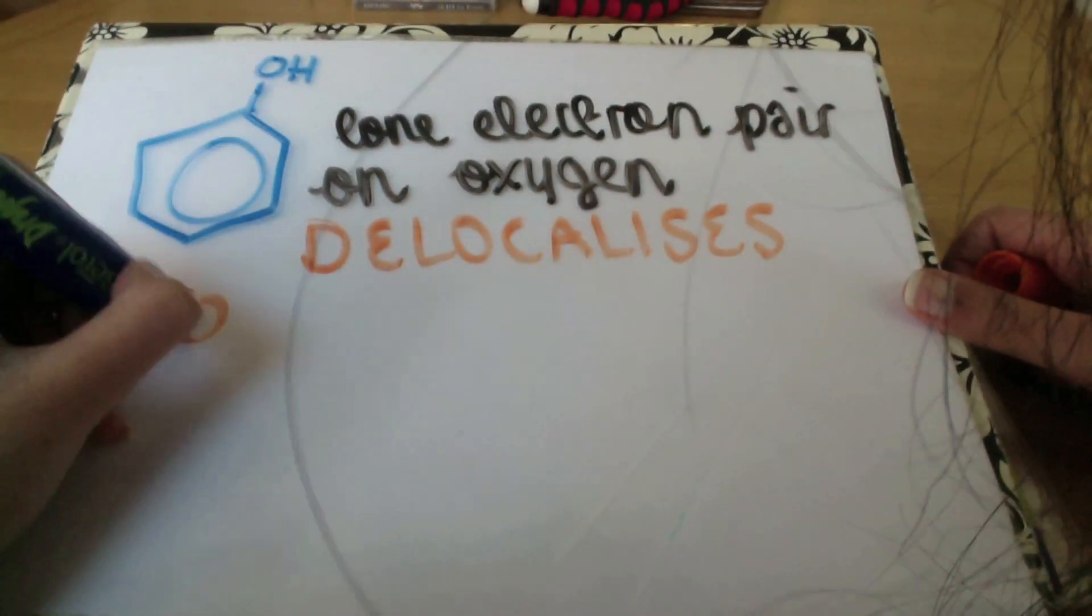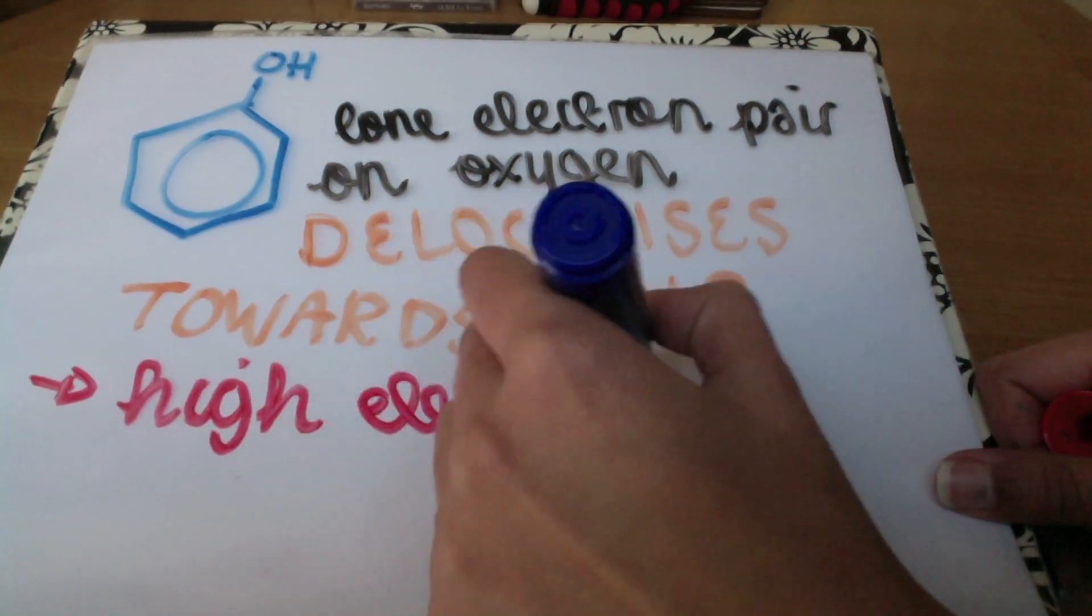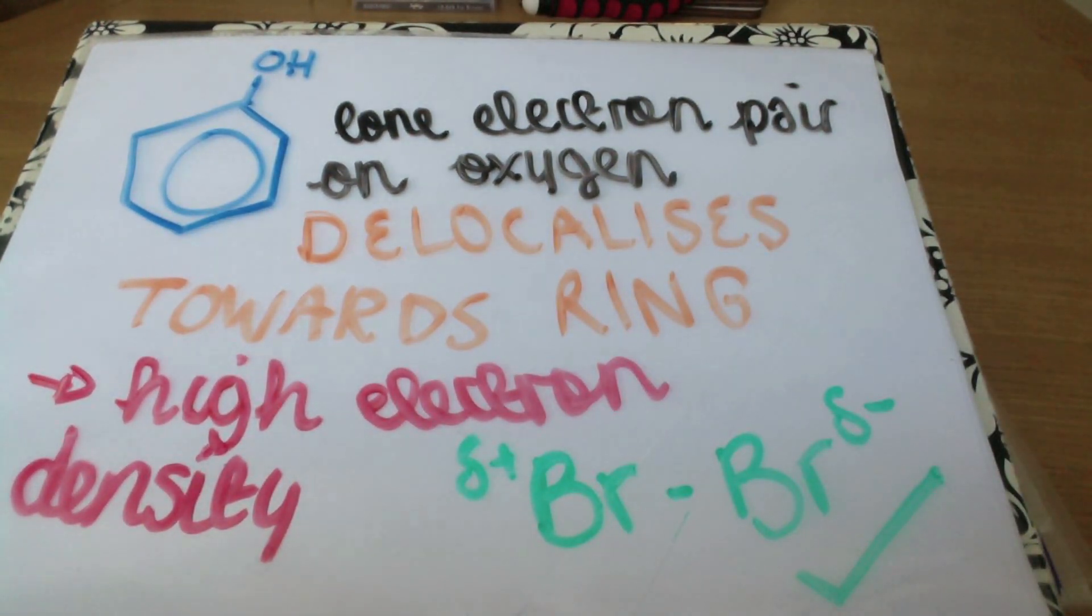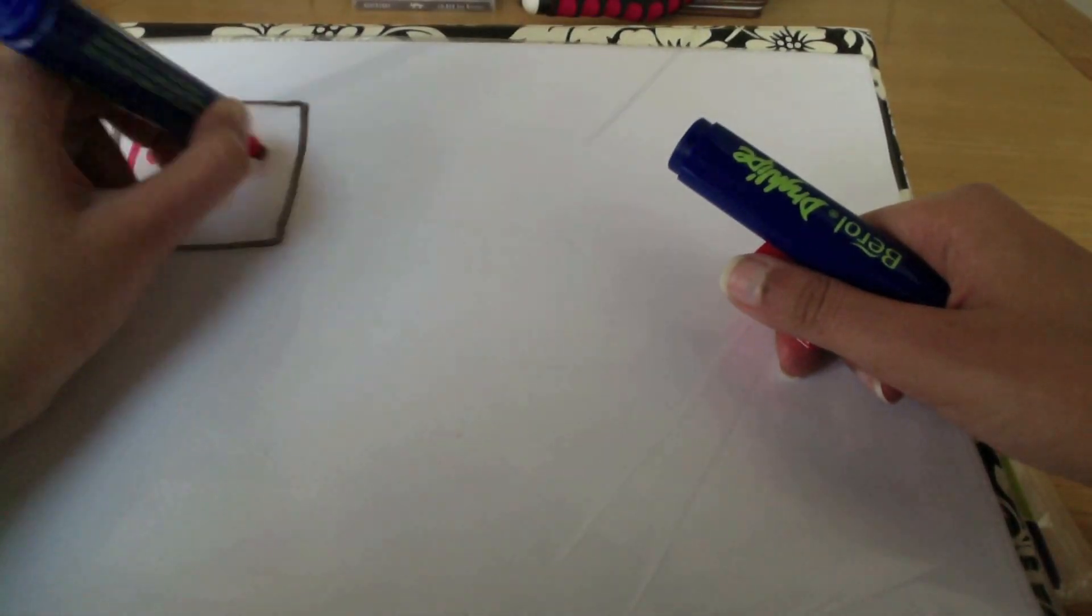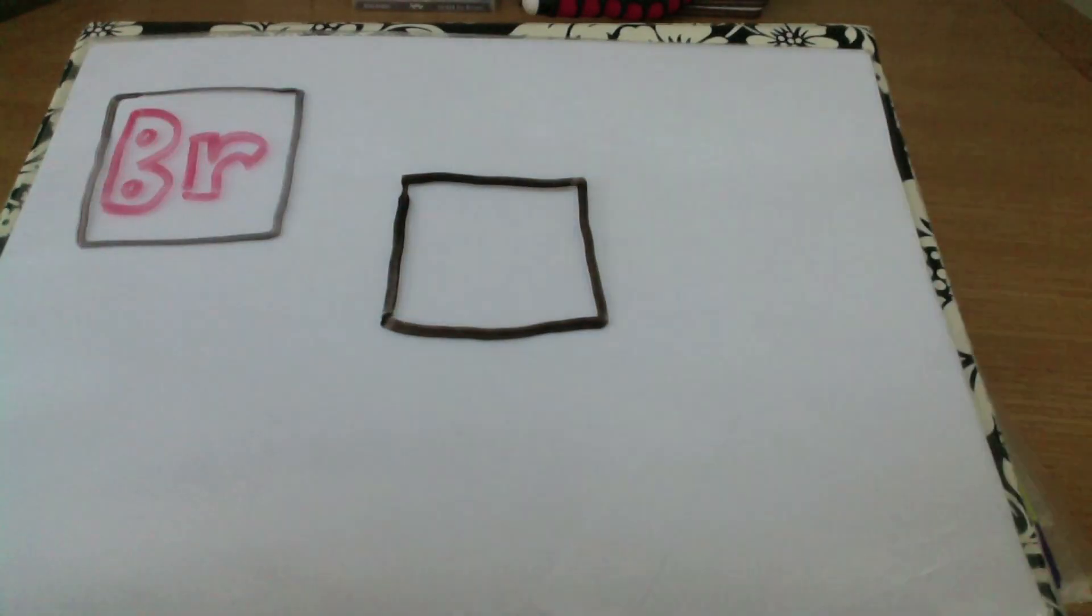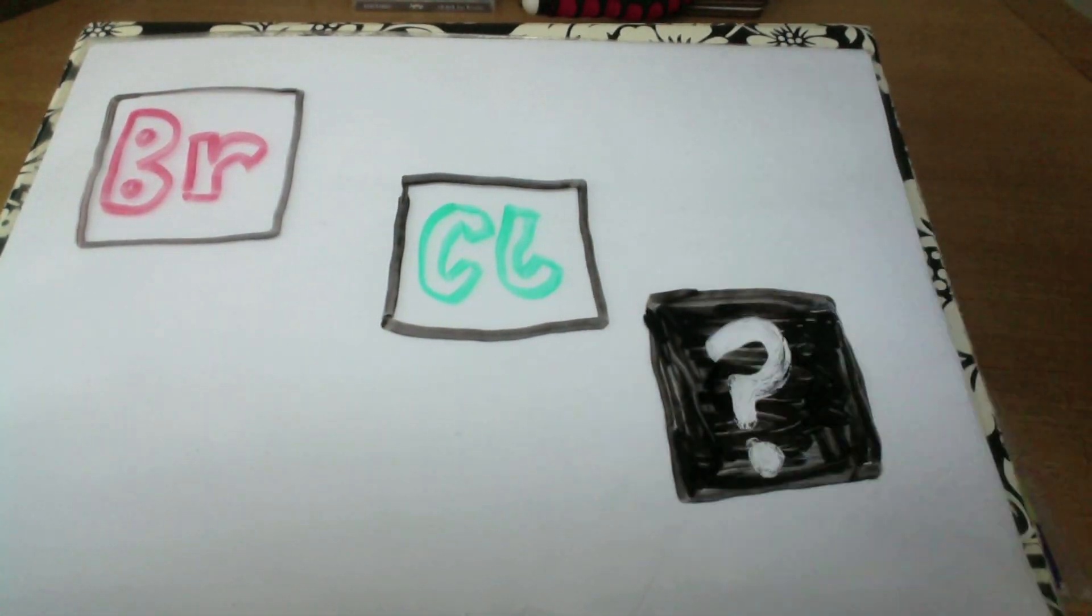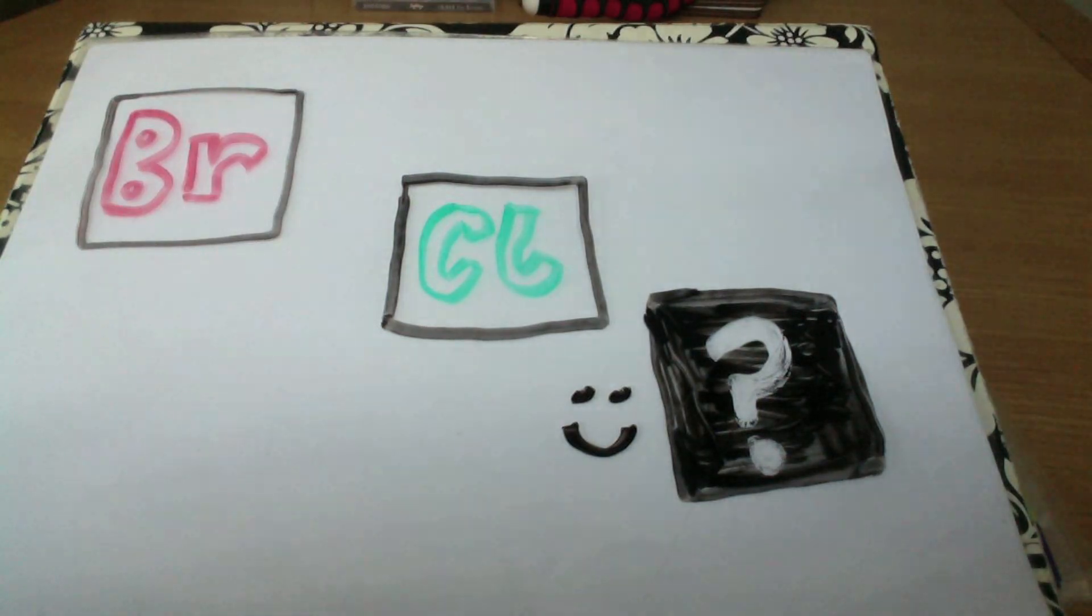The electron density is higher and it can polarize the bromine molecule. Also, another point to remember is that it might not necessarily be bromine that they give you in an exam. It can be chlorine or it could be another molecule that isn't a halogen where they just want you to apply these principles.